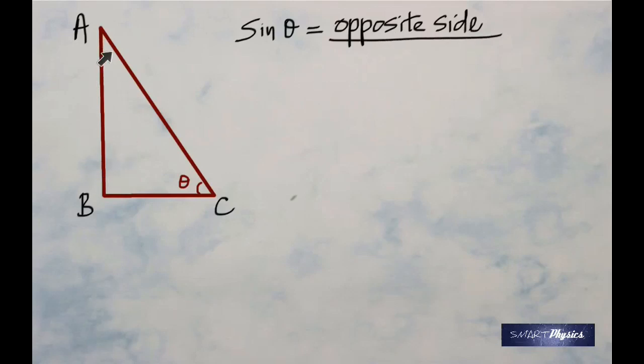And the hypotenuse is the biggest side. Therefore, sin theta is going to be AB divided by AC. Sin theta is opposite side divided by hypotenuse.